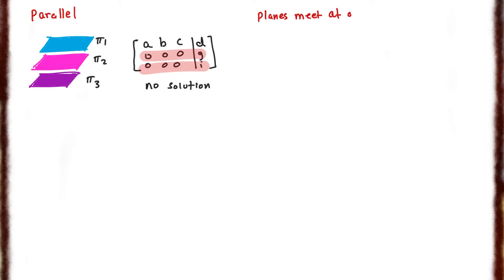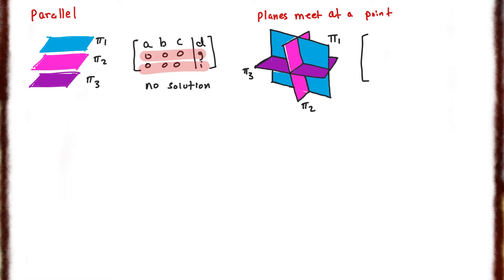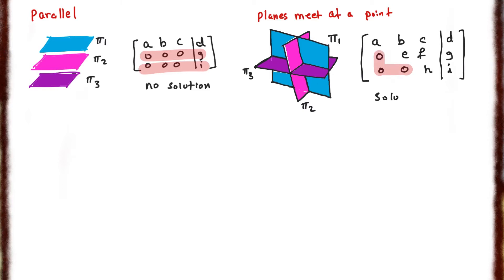The next situation is when all three planes meet at one particular point. In this case, the augmented matrix allows us to solve for x, y, and z. There are no rows with all-zero coefficients and a non-zero constant, and no rows of all zeros. Our solution is one unique point.